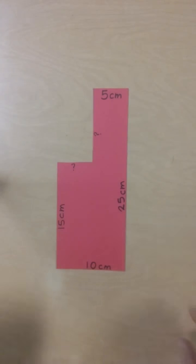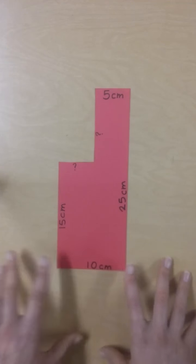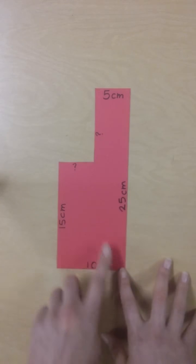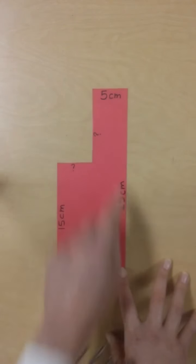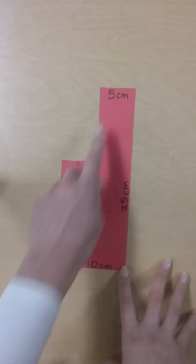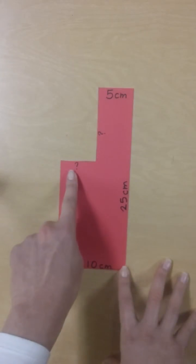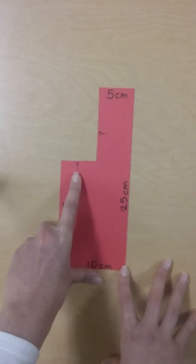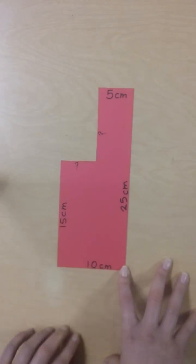So assuming that I know this is 5 centimeters and this is 10 centimeters, half of this is going to be 5 centimeters. So I know that this side is 5 centimeters.